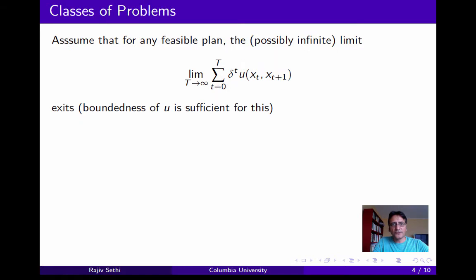We'll assume throughout that for any feasible plan, the limit as t goes to infinity of the sum of discounted one-period returns from 0 to t is well defined. Boundedness of u is clearly sufficient but not necessary for this. We're allowing for the possibility that this limit might be infinite, but we're assuming that the limit exists.